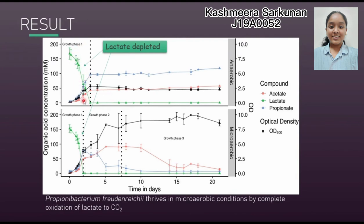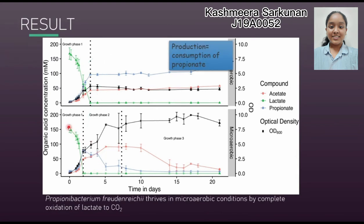Lactate acts as the carbon source in this phase. When lactate is depleted, there is production of acetate and propionate, which slowly increases. At growth phase two, when lactate is depleted, there is an initiation of a propionate consumption phase. The concentration of propionate slowly decreases, indicating that consumption of propionate is occurring. A switch from propionate production to consumption can be observed as the bacteria transition from anaerobic to aerobic conditions.